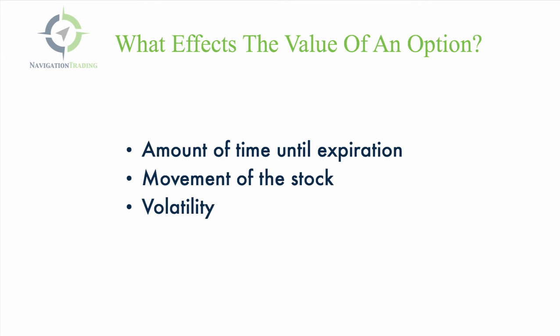There are three things that really affect the value of an option. First, the amount of time until expiration. We know that every option expires at some point in the future, so as we get closer and closer to that expiration date, that changes the value of that underlying option. The second thing is the movement of the underlying stock. Depending on which option strikes you've chosen, the movement of the stock closer to or farther away from that particular strike is going to affect the value of that option.